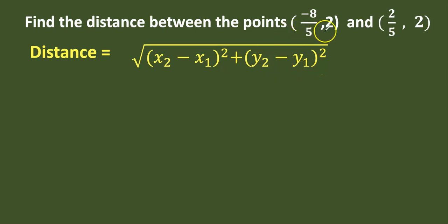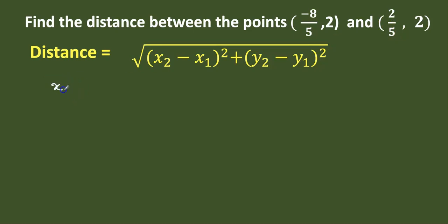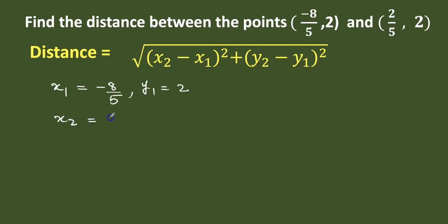Here we have two points. The first point represents x1, y1, and the second point is x2, y2. So let's write: x1 is minus 8 by 5, y1 is 2, and x2 is 2 by 5, y2 is 2.